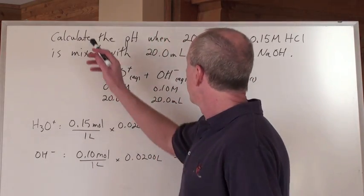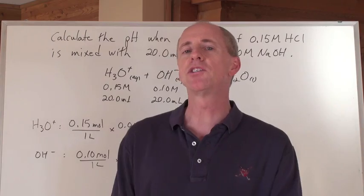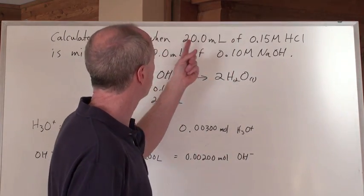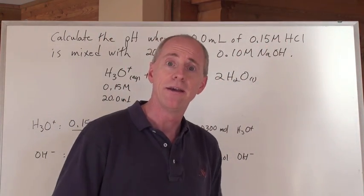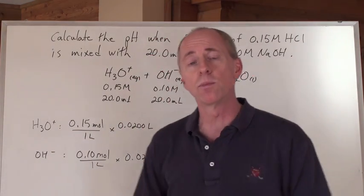Another nice question here. Calculate the pH of a solution of a mixture of an acid and base together when you have 20 milliliters of 0.15 mole per liter HCl and you've got to mix it with 20 milliliters of 0.10 mole per liter NaOH.